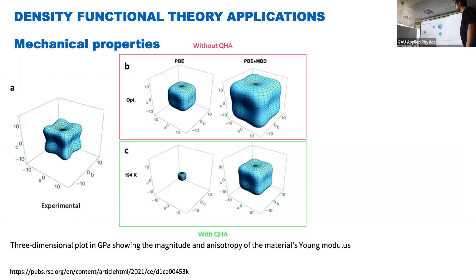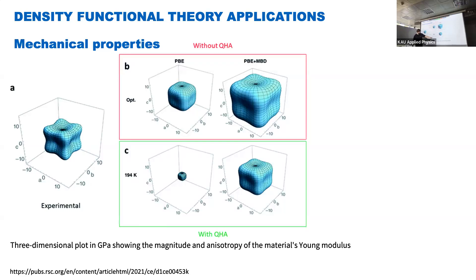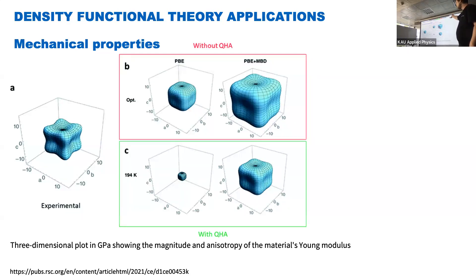Another example is mechanical properties. In our lectures we will calculate electronic properties, but if you work in an engineering sphere you also need mechanical properties. Here is a three-dimensional plot in gigapascals showing the magnitude and anisotropy of Young's modulus for a material from experiment, compared with different DFT simulation setups. You can then use materials with known mechanical properties to create buildings or engineering structures.